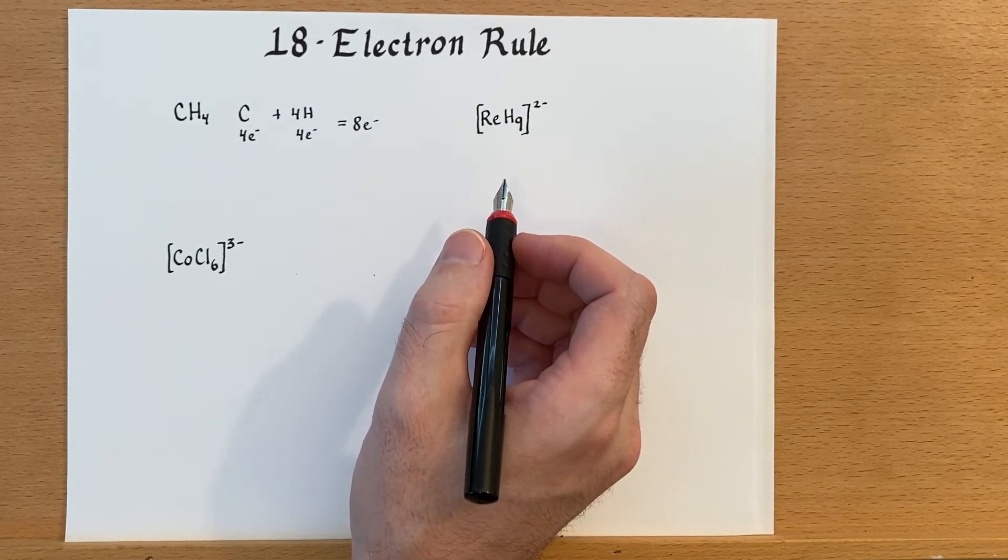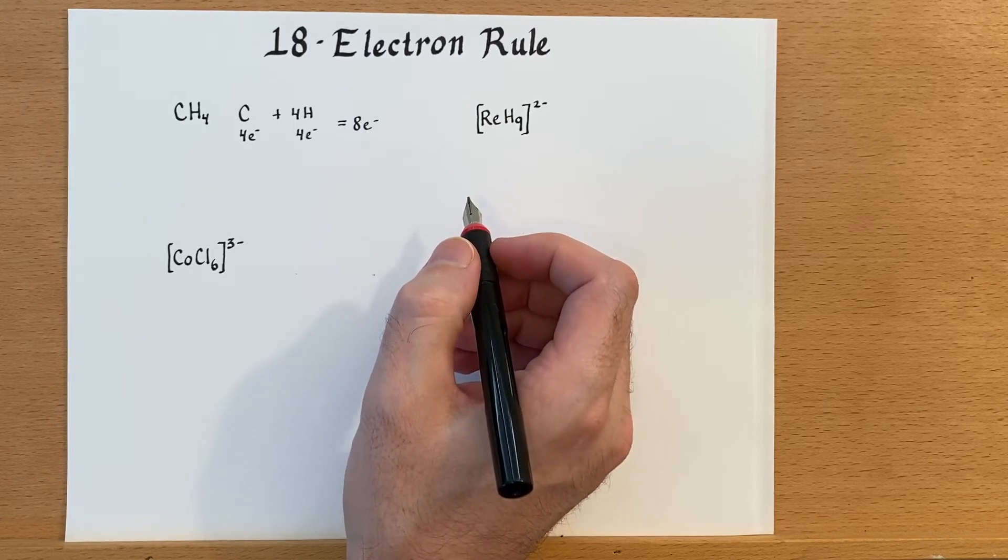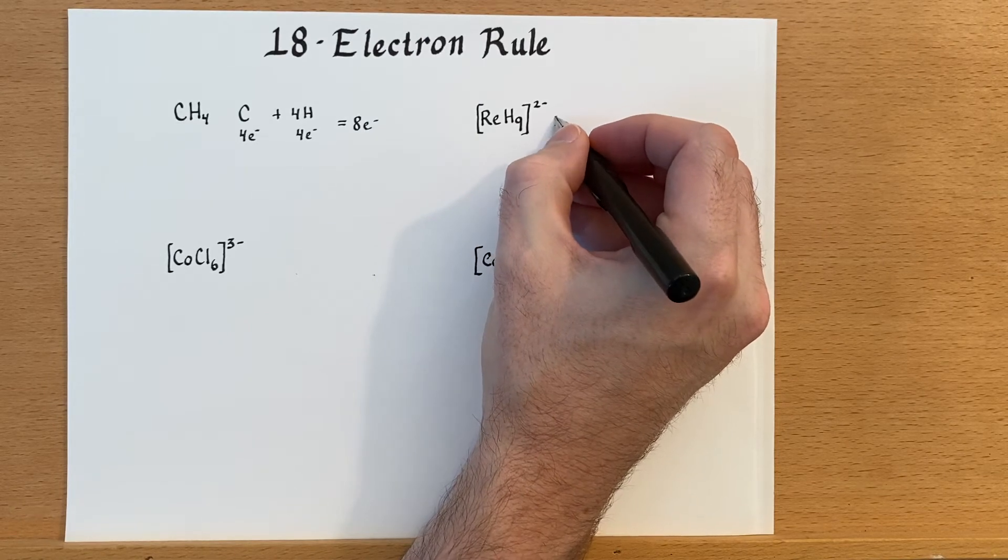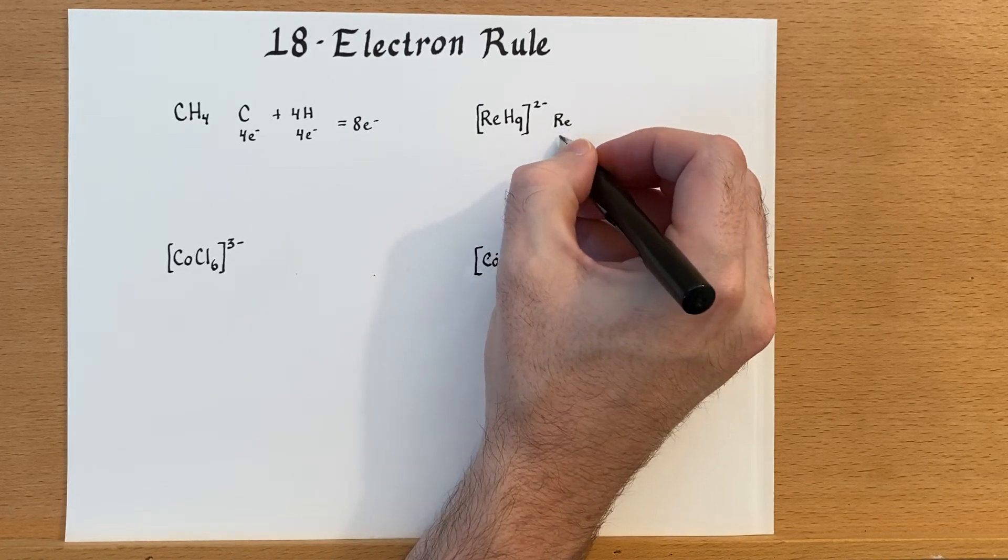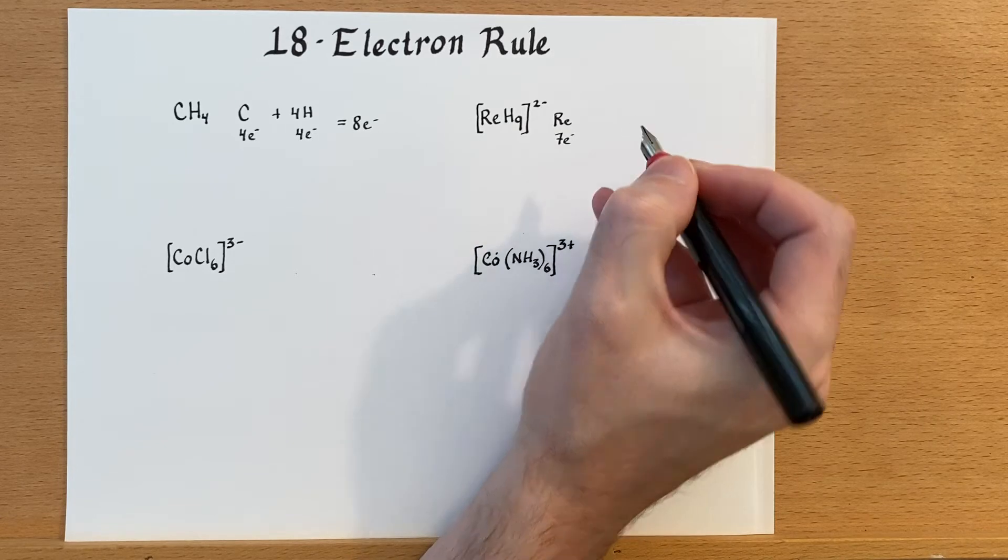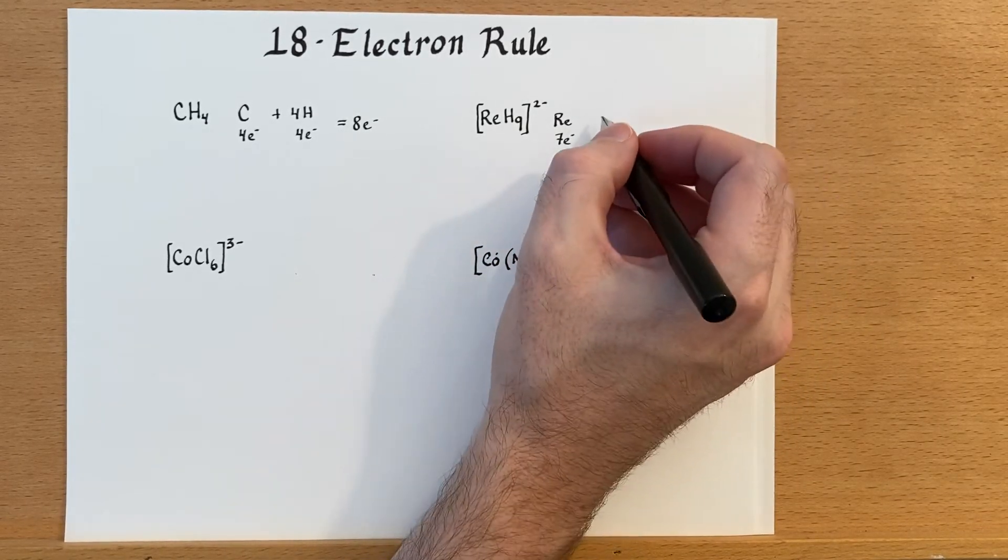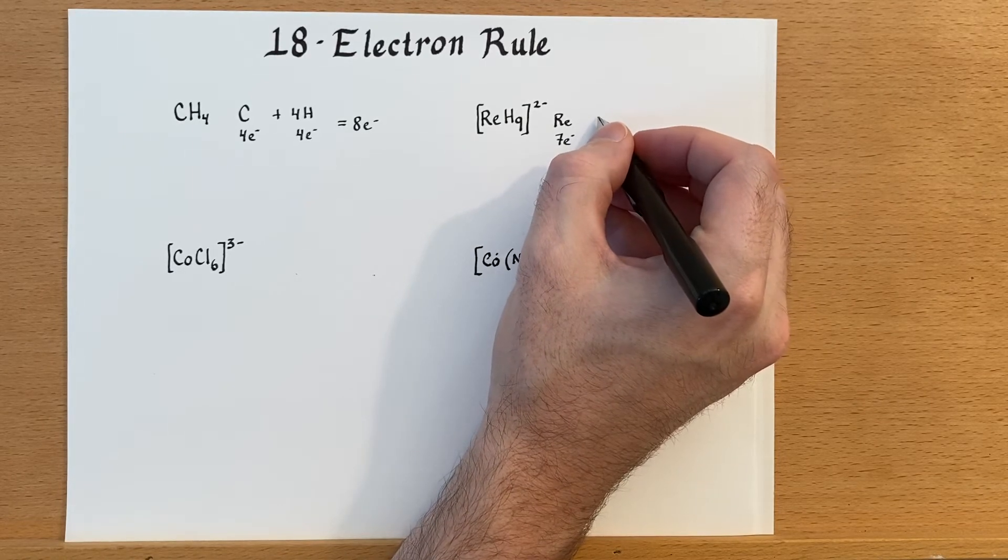If we look at the periodic table, we'll notice that rhenium has seven electrons to it, and then our hydrogens are each going to bring in one electron apiece.